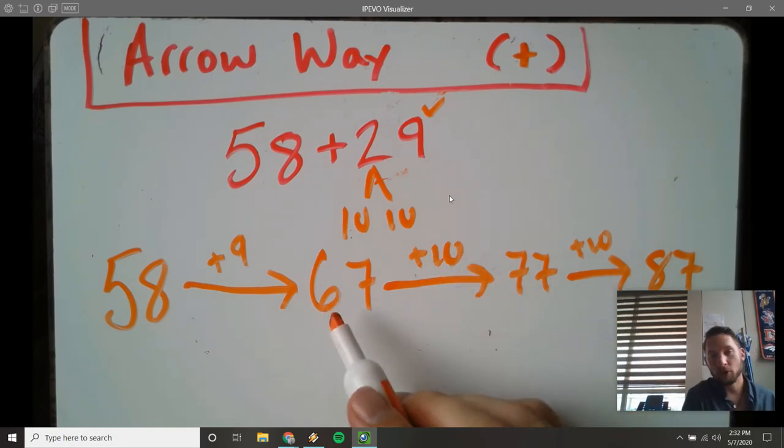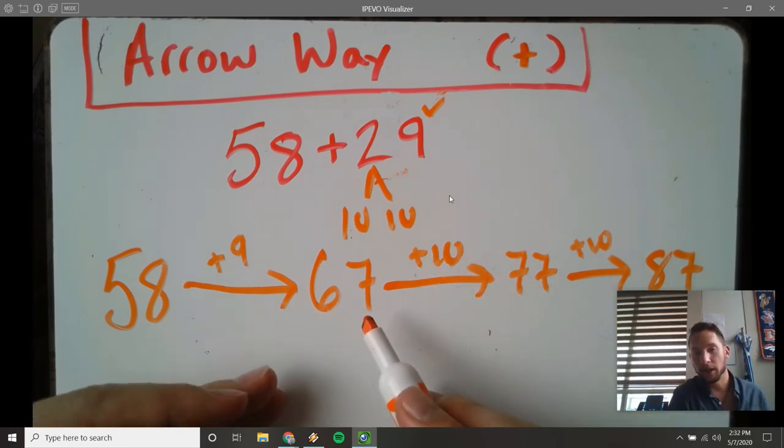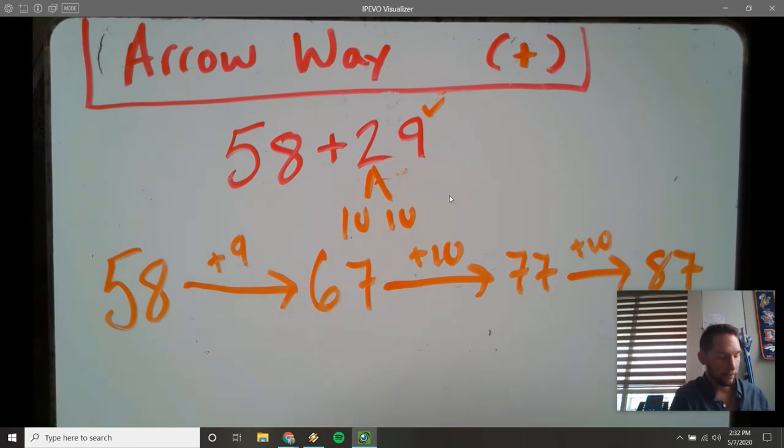Arrow way is like number line, it's just more straightforward. And that's it for adding with the arrow way.